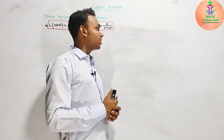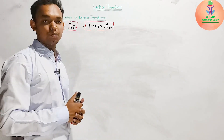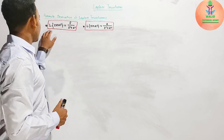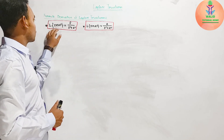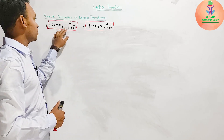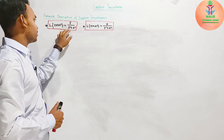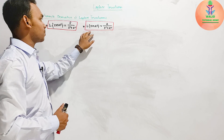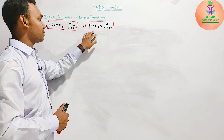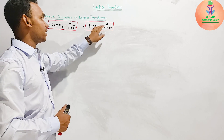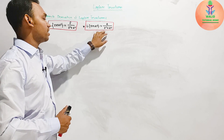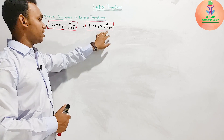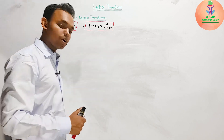Dear students, the Laplace transform of cos(at) equals s divided by s² plus a². The Laplace transform of sin(at) equals a divided by s² plus a². We will now prove these two formulas.